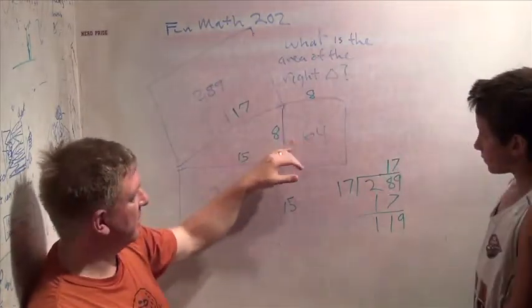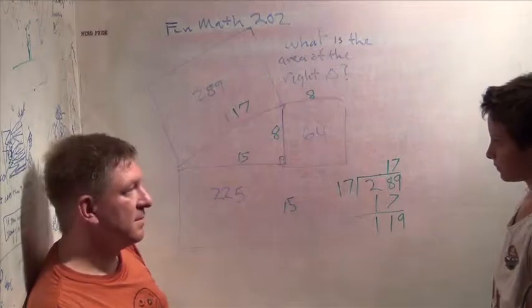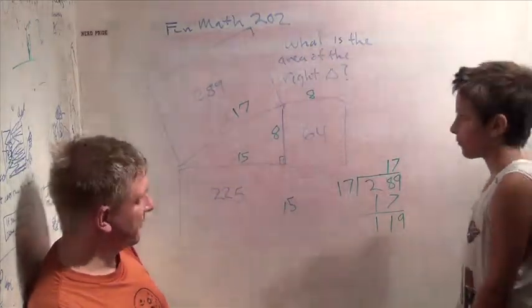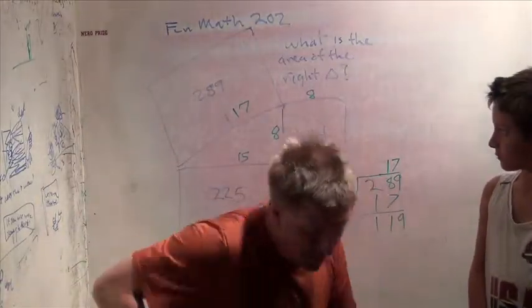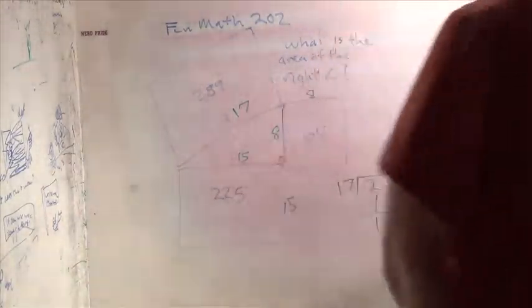So you learned a new Pythagorean triangle, by the way. 8, 15, 17. That's cool. What's your favorite Pythagorean triangle? 3, 4, 5. Yeah, that's a little bit easier. Good job this morning.